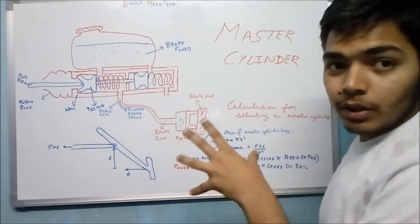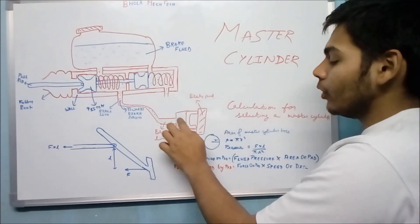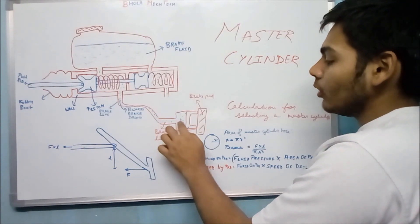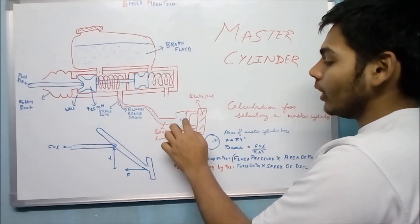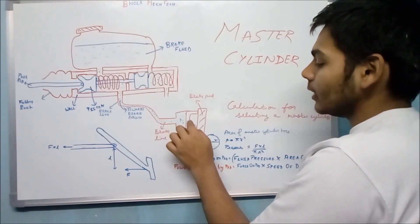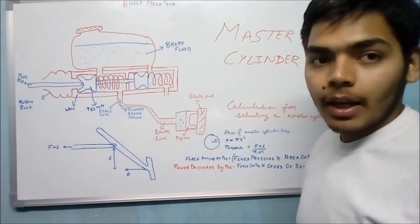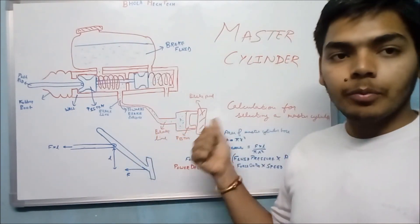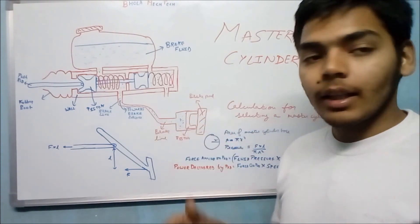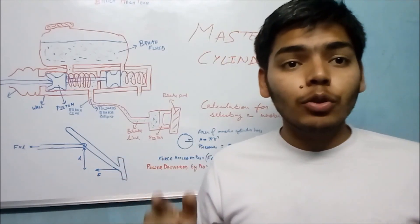This diagram shows the basic function of the caliper — the caliper doesn't actually look like this. The fluid comes from the brake line to the caliper. This pressurized brake fluid exerts force on the caliper piston, which displaces the brake pad. The force applied on the brake pad is then applied on the disc, and the friction between the disc and the brake pad creates resistance, decreasing the speed of the tire.